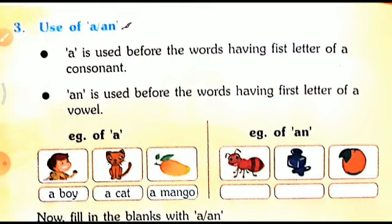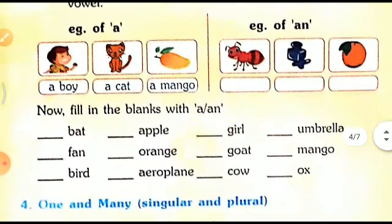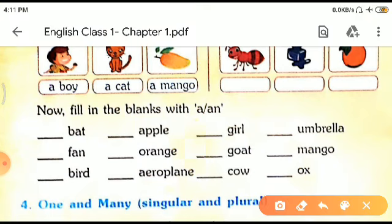Just see here. For example, B is a consonant. The picture is of a boy. So, A is used. The picture is of a cat. C-A-T. The first letter is C. So, A is used. This picture is of a mango. The spelling of mango is M-A-N-G-O. It begins with M. M being a consonant. So, we will use A.